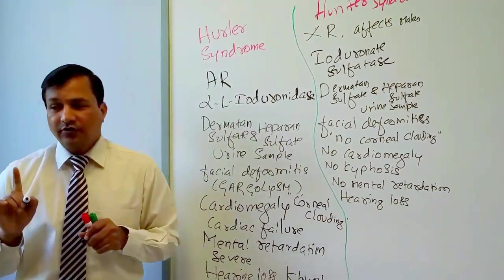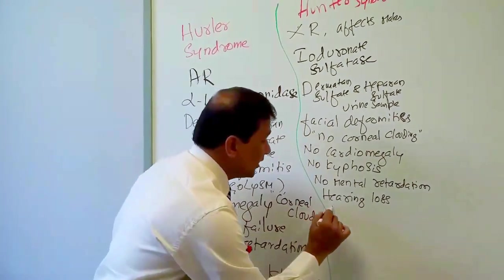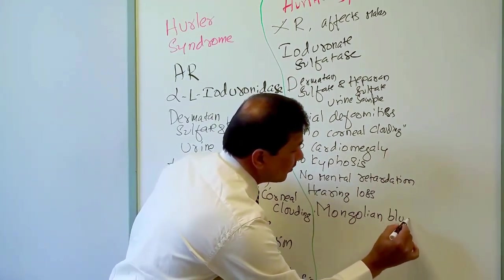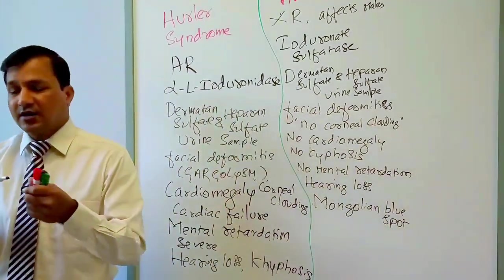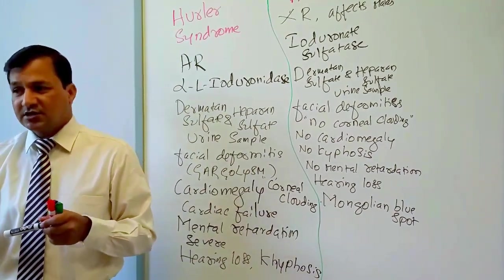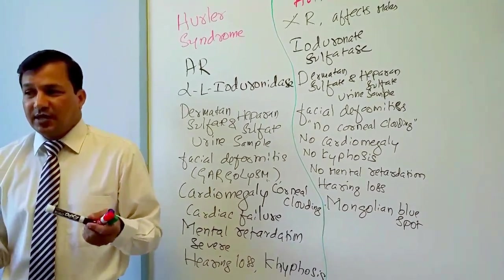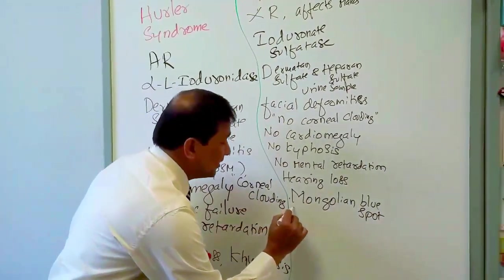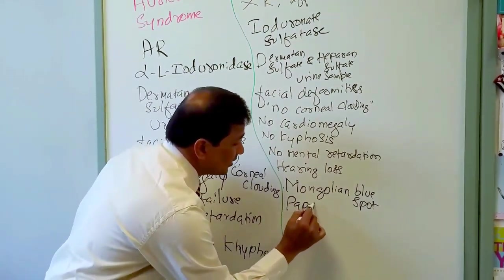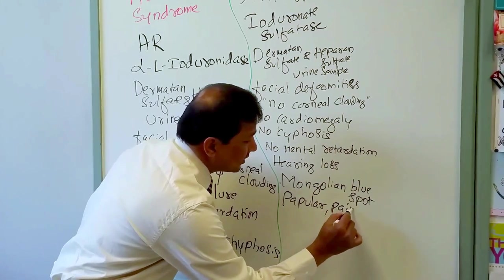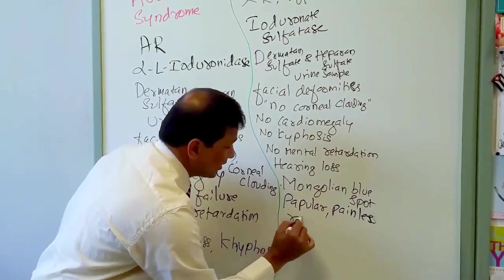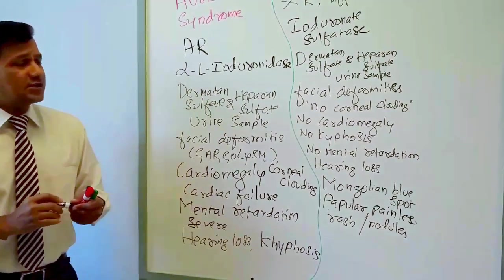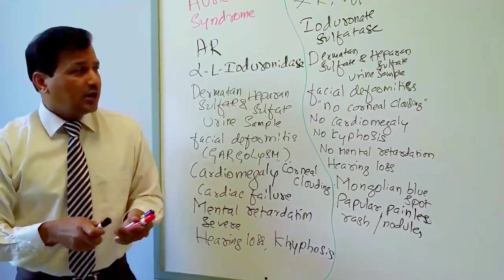Extra signs characteristic of Hunter syndrome include Mongolian blue spot, especially on the sacral area — a bluish discoloration visible even immediately after birth — and papular painless rashes or nodules between the scapulae. These are the characteristic signs of Hunter syndrome.